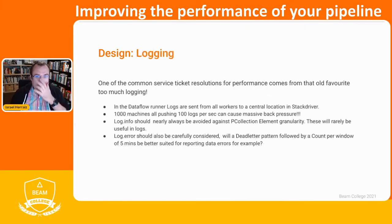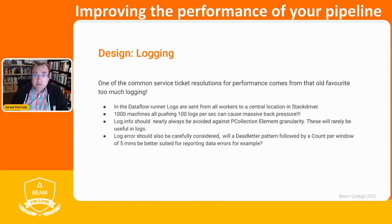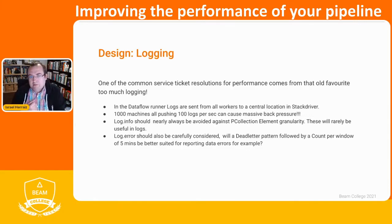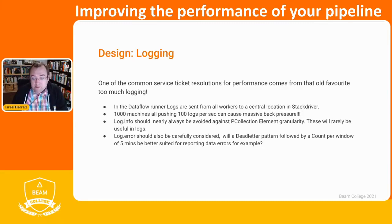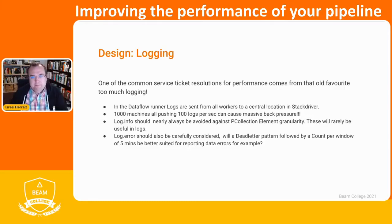Logging can also be a source of problems. I have seen pipelines that for every message processed send one or more lines of logging. When you're writing logs, this is another output of the pipeline — you're writing data to a logging service (like Cloud Monitoring, previously called Stackdriver), sending data across the network to some endpoint. If you do this once per element, it's kind of duplicating the processing you're making and that can definitely have an impact on performance.